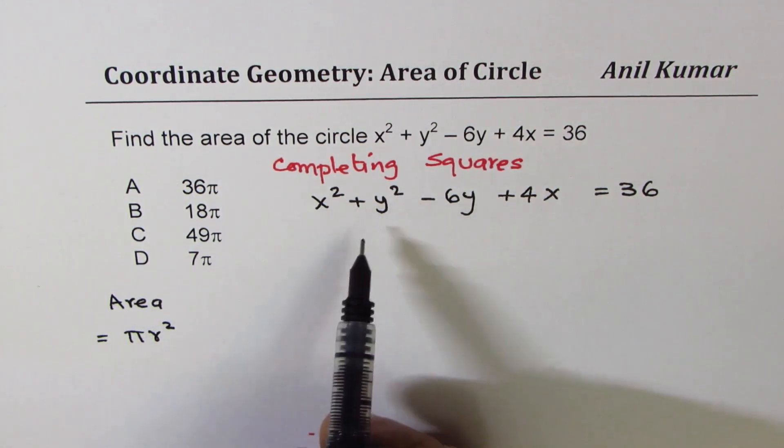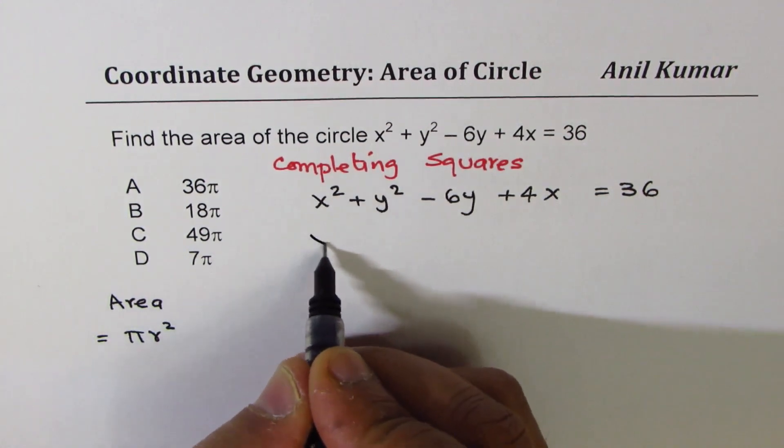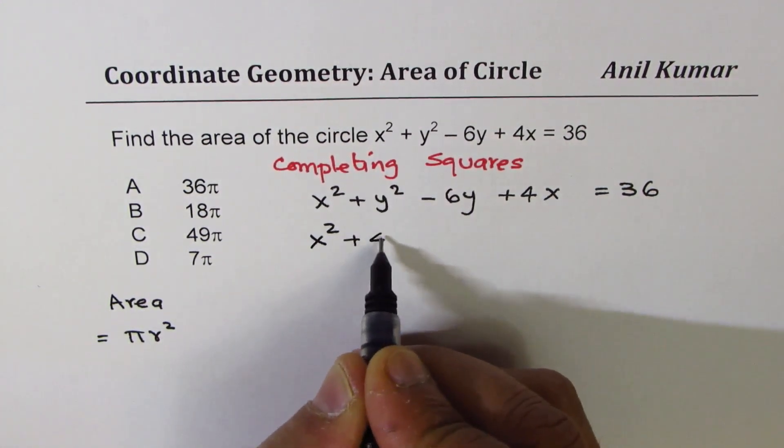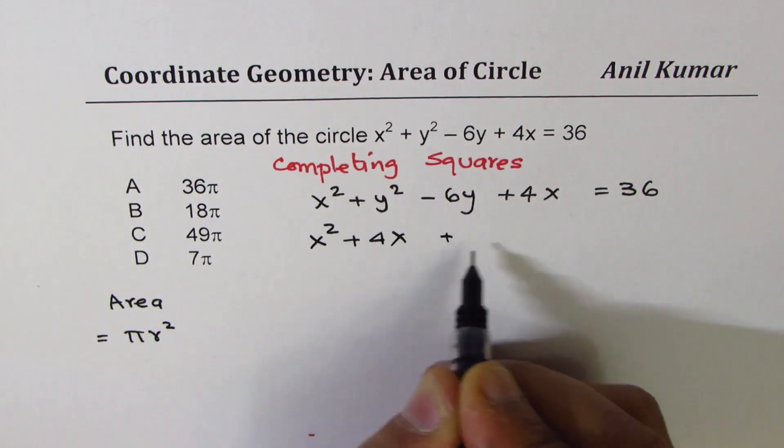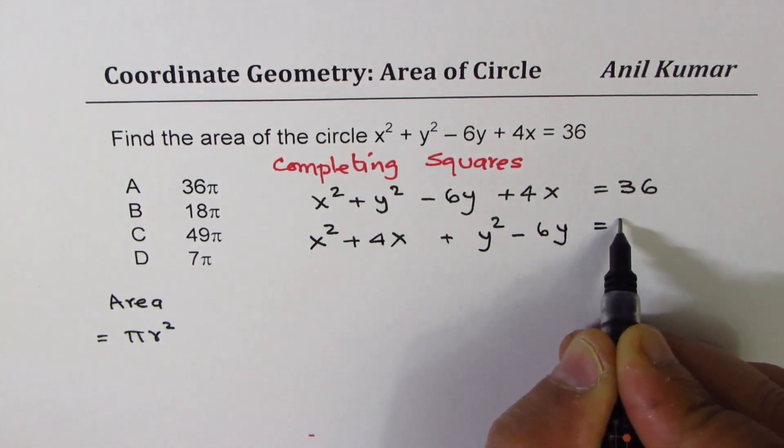For that, we will complete the squares. Let us first rearrange x and y terms. We have x² + 4x + y² - 6y = 36.